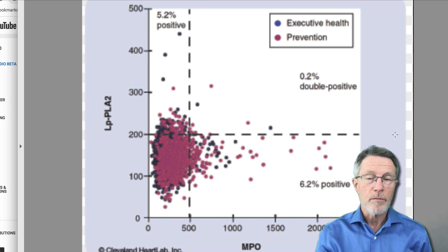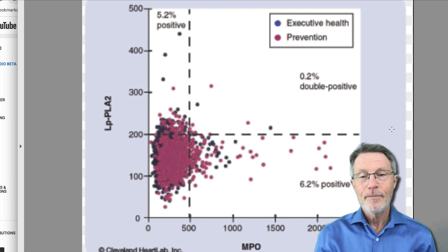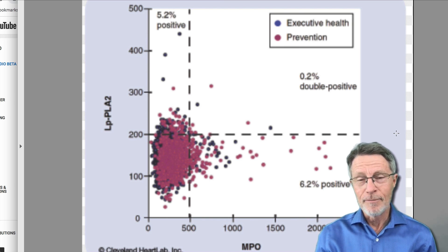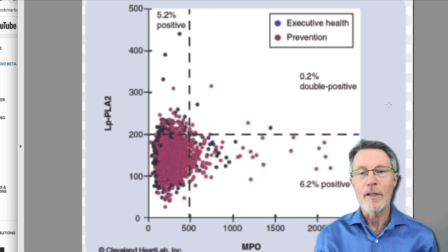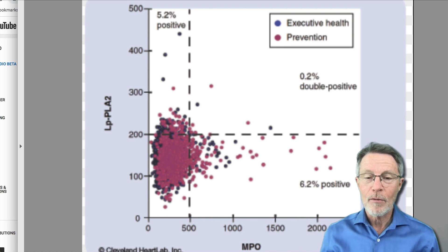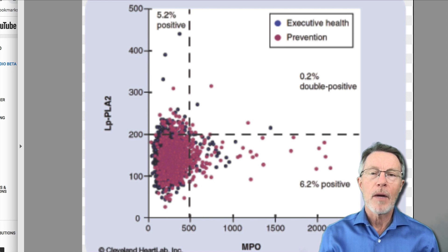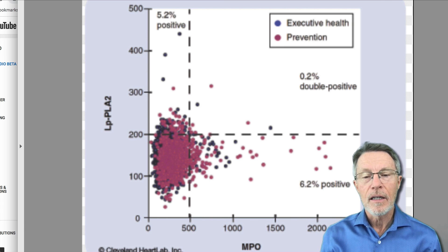There are also problems — there's no free lunch and nothing's ever that simple. MPO itself is one of the most common tests for having false positives. If you haven't seen my MPO video in this course, go take a look. One more time, to clarify: PLAC-2 is an enzyme released by monocytes when they are attacking the plaque found between the intima and media layers of the arteries.